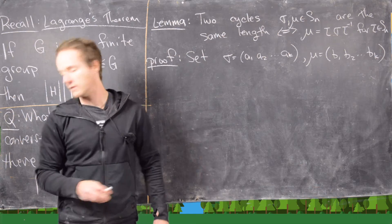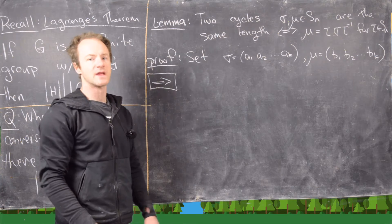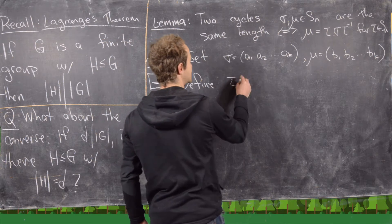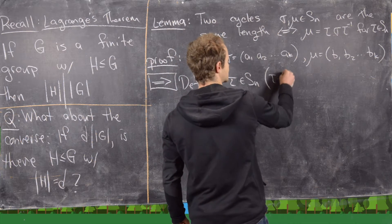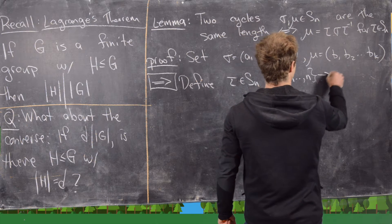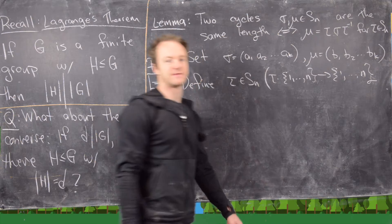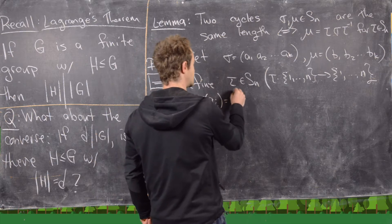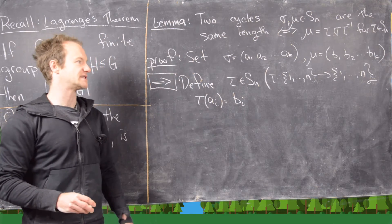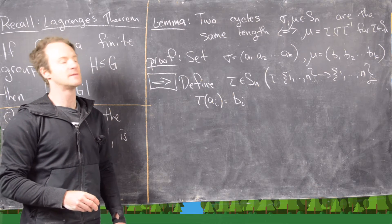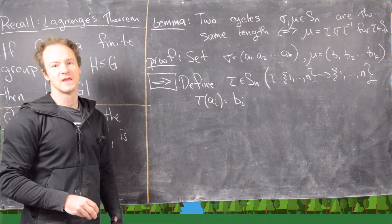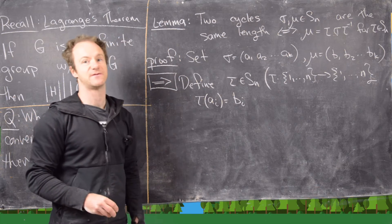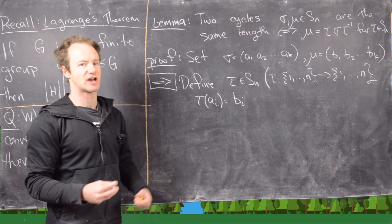We'll go in the forward direction first. Let's define tau as follows. Remember, tau needs to be an element of SN — in other words, a bijection from {1,...,N} to {1,...,N}. We define tau of AI equal to BI, so A1 maps to B1, A2 maps to B2, and so on up to AK maps to BK. Everything else — every number between 1 and N not in this list — is fixed. It's straightforward to check that this defines a bijection.